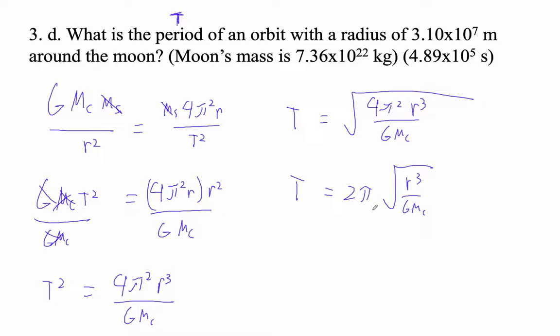And the denominator, I've got 6.67 e minus 11 times... oh wait, no. What's our mass?